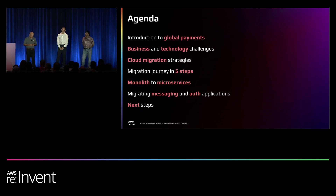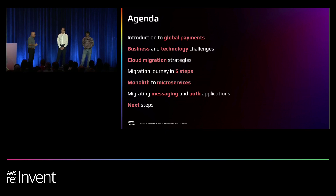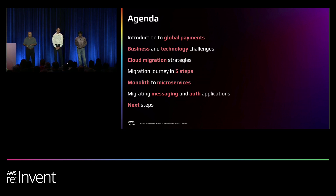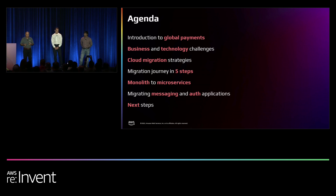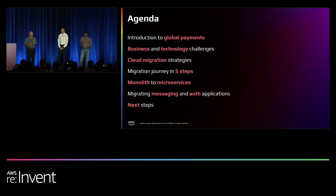Gabby will start with an introduction to Global Payments and the scale at which they operate. He will then talk about the business and technology challenges they are facing in terms of migration and modernization effort. He'll talk about the cloud strategies they are adopting for migration. Then Krishna will talk about the five steps for migrating critical workloads to AWS using a microservices strategy. We'll also cover monolithic to microservices architectures, and two critical application examples: messaging and authorizations.